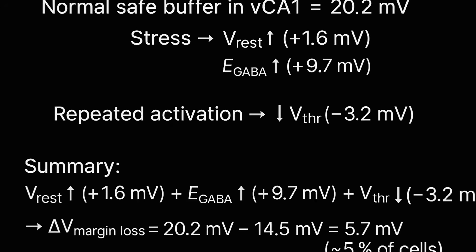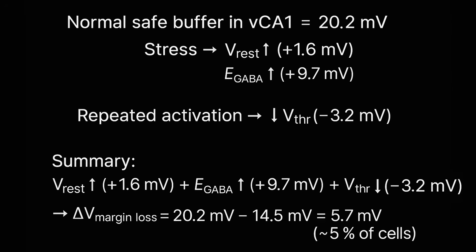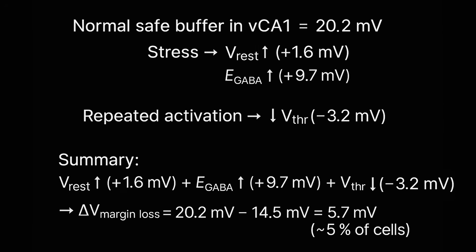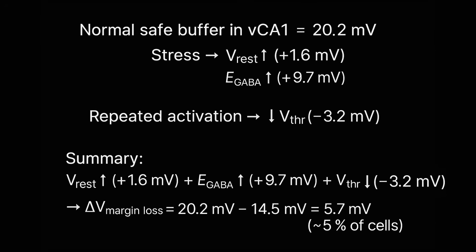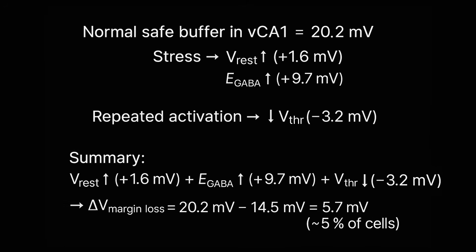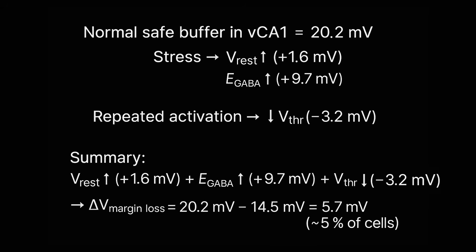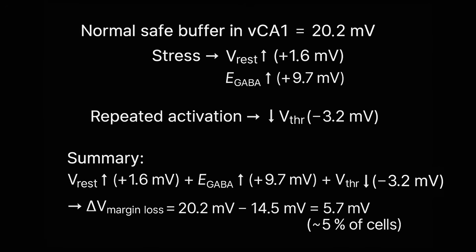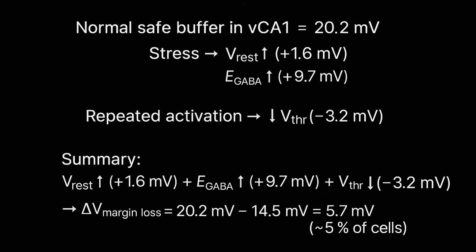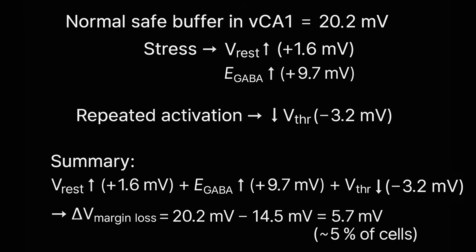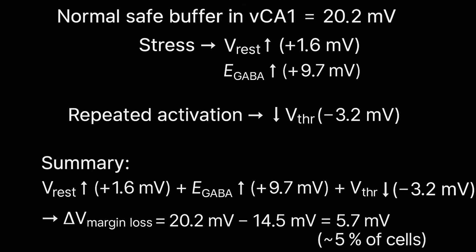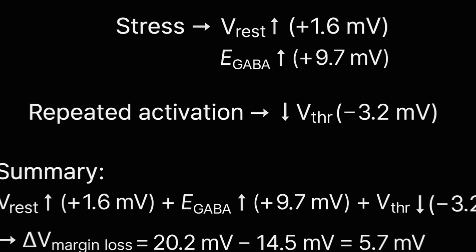Although each of these mechanisms follows a different pathway — metabolic, ionic, and kinase-related — their effect is the same. The margin between the resting potential and the firing threshold, that is the energy required to activate a neuron in vCA1, becomes reduced. This state is referred to as delta V-margin collapse, a functional narrowing of the excitability margin.